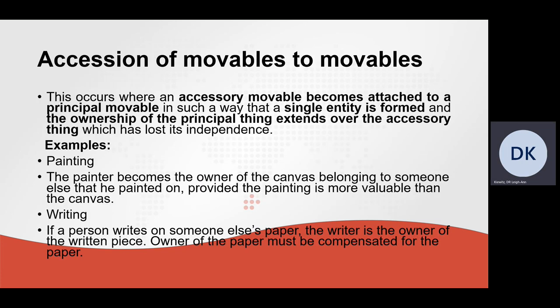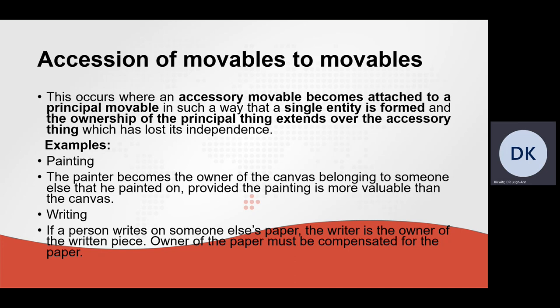Accession of movables to movables occurs when an accessory movable becomes attached to a principal movable in such a way that a single entity is formed and the ownership of the principal thing extends over the accessory thing, which has lost its independence. An example would be a painting: the painter becomes the owner of the canvas belonging to someone else that he painted on, provided that the painting is more valuable than the canvas. If a person writes on someone else's paper, the writer is the owner of the written piece, but the owner of the paper must be compensated for the paper.